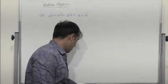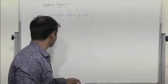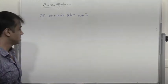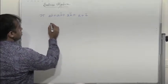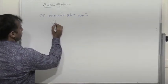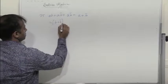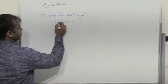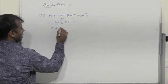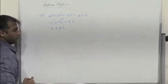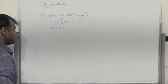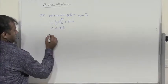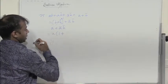Next, prove that AB plus AB bar plus A bar B bar equals A plus B bar. First, take A common from the first two terms: A(B plus B bar) plus A bar B bar. Since B plus B bar is 1, we have A plus A bar B bar.